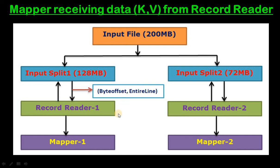After that, Record Reader goes back to the input split, reads the second line, and converts it to a byte offset key and the entire line as the value. For the second line, the byte offset value will be the length of the first line plus 1. So if the length of the first line is 20, then the byte offset for the second line is 21. Like this, Record Reader reads each line of the input split, converts it to a key-value pair, and passes it to the mapper.